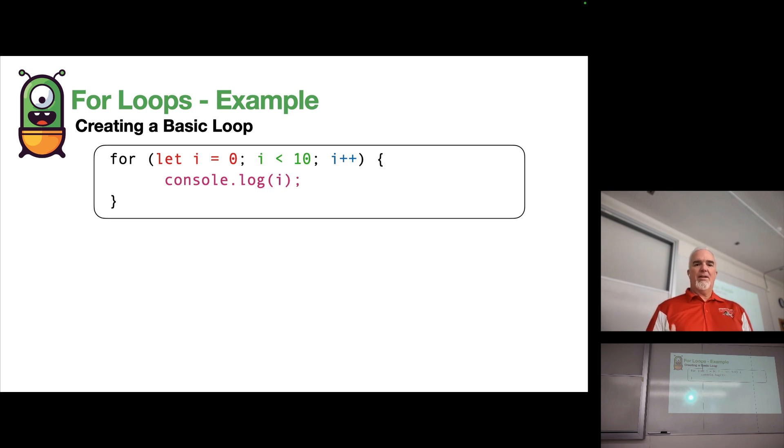It will not include 10 because as soon as i equals 10, that condition is no longer true since i needs to be less than 10. So we'll stop at 9 and print those numbers to the console.